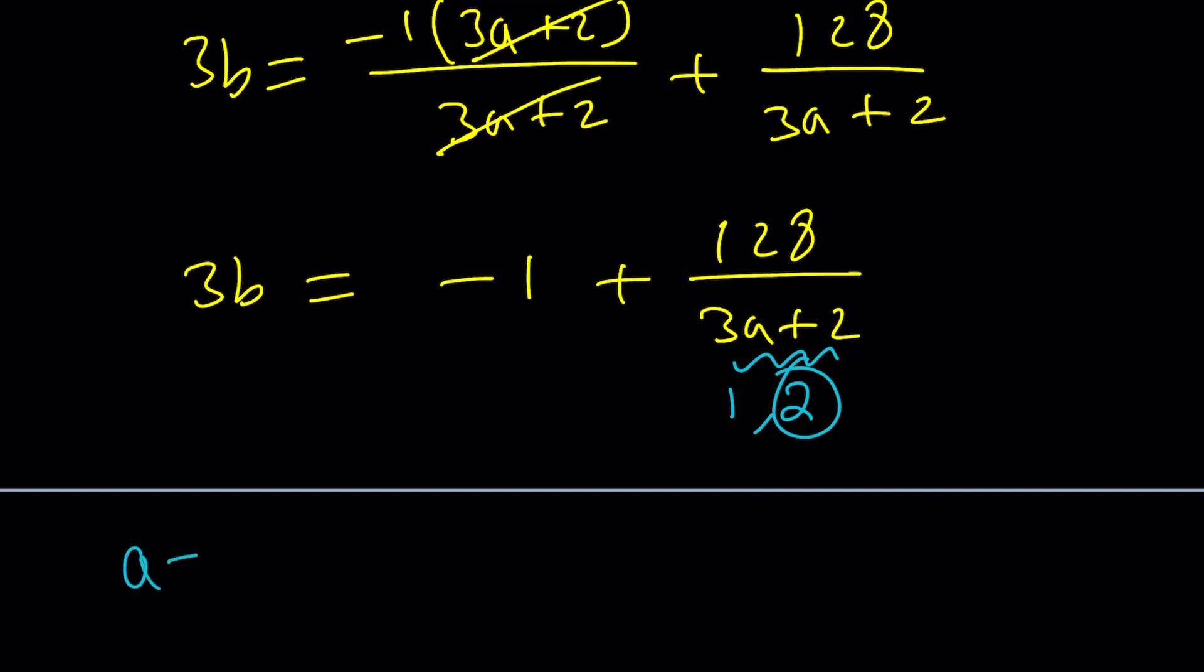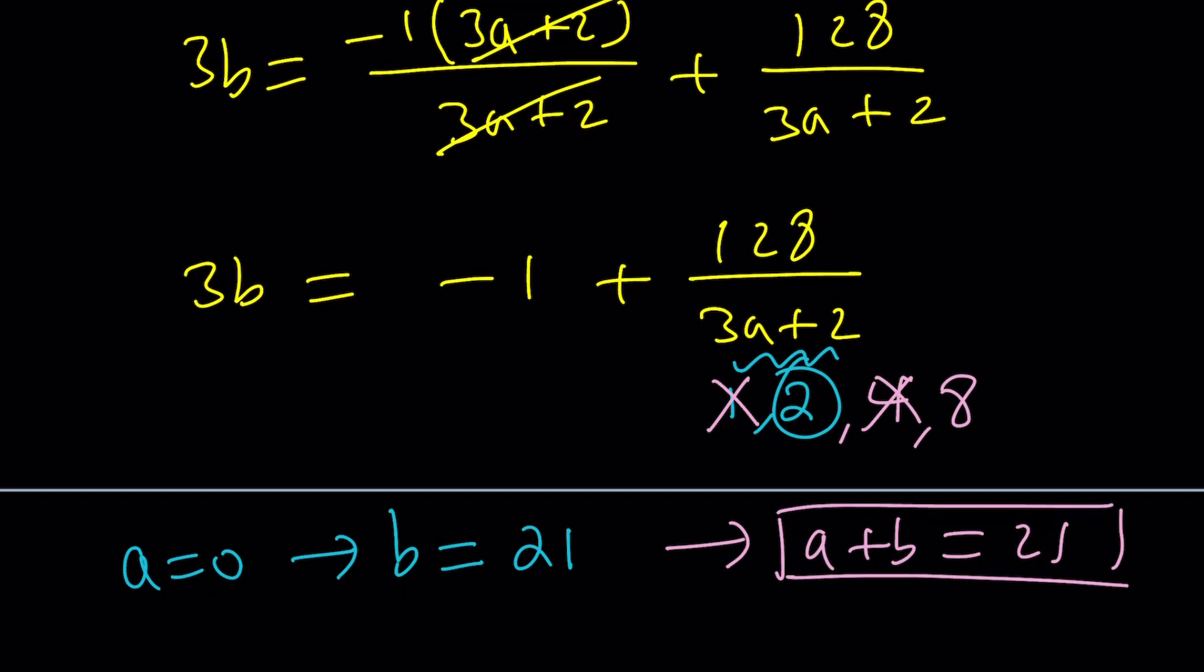So that means for A equals 0, we get B equals 21. So that's going to give us a solution, and from here, obviously, A plus B is going to be 21. Remember, we were looking for A plus B, and this is one of the values. You can continue in this manner. Since 128 is 2 to the 7th power, all the divisors are going to be powers of 2, like 2 to the 2nd, 2 to the 3rd, 2 to the 4th, all the way up to 2 to the 7th. The next one is going to be 4. If this is 4, then 3A plus 2 is not going to work. 8: 3A equals 6 is going to work. 128 divided by 8 is 16. Negative 1 plus 16 is 15. That works too. This means B equals 5, and their sum is 7. That's another value that works.